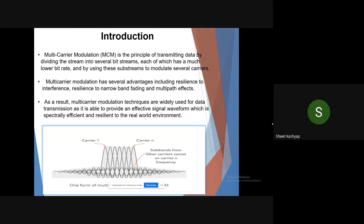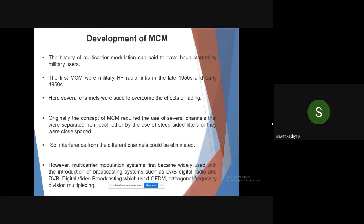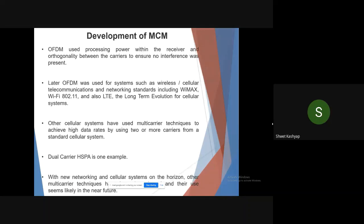The brief history of MCM: it was initially started by the military in the 1950s and 1960s. Originally, MCM required several channels separated by steep silent filters, as they were closely spaced, so interference from different channels could be eliminated. MCM first became widely used with broadcasting systems such as DAB digital radio and DVB, which use OFDM (Orthogonal Frequency Division Multiplex). These use processing power within the receiver and orthogonality between carriers to ensure no interference, and other cellular systems use multi-carrier techniques like dual carrier HSPA.